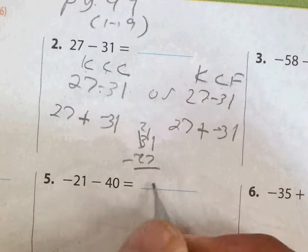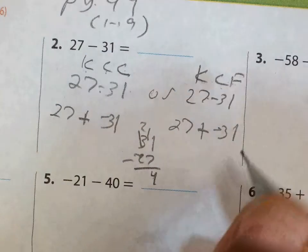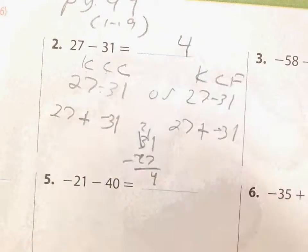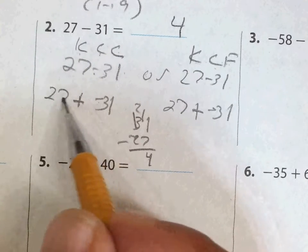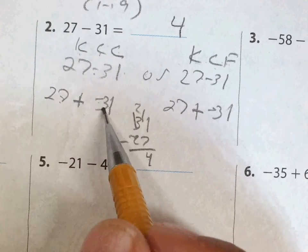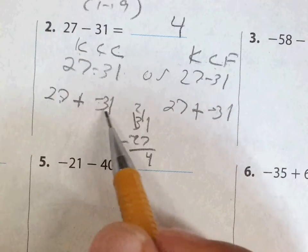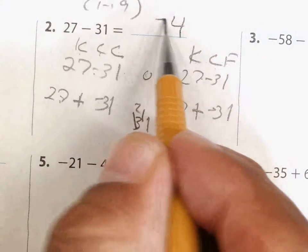And that gives me 4. So it means my answer is 4, but is it positive or negative? Again, who is further away from zero? And you can tell 31 is further away and he has a negative sign, so my answer has to be negative.